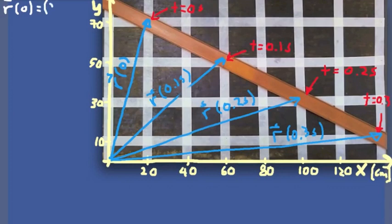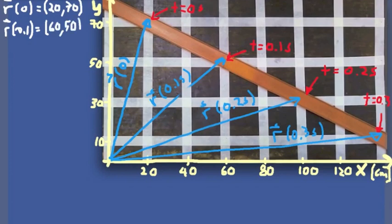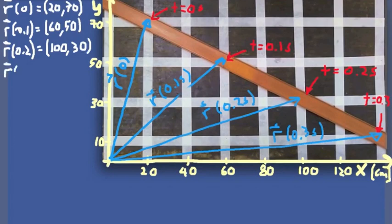It's useful to write the vectors with their two components, X and Y. For r at t=0 (point A): X=20, Y=70. For r at t=0.1 (point B): X=60, Y=50. For r at t=0.2 (point C): X=100, Y=30. For r at t=0.3 (point D): X=140, Y=10. All values are in centimeters.